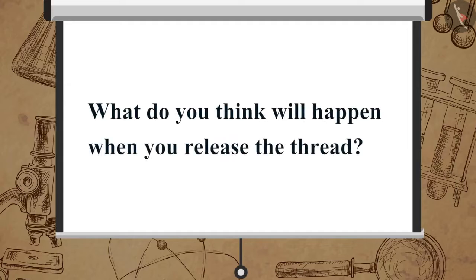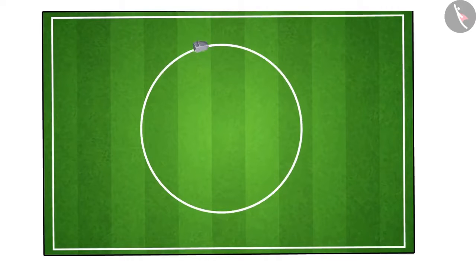What do you think will happen when you release the thread? Now let us understand what was happening. Before the thread is released, the stone revolves in a circular path with a certain speed. The stone changes direction at every point.